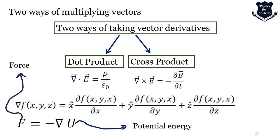The equation at the bottom shows taking the del operator and treating it as a sum of x, y, and z components multiplied by a scalar function, which gives a kind of potential.